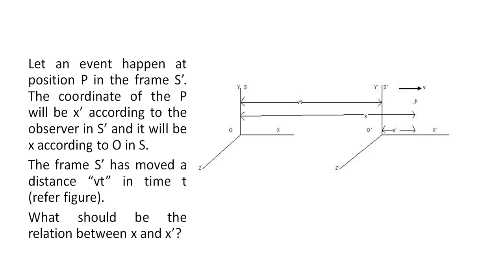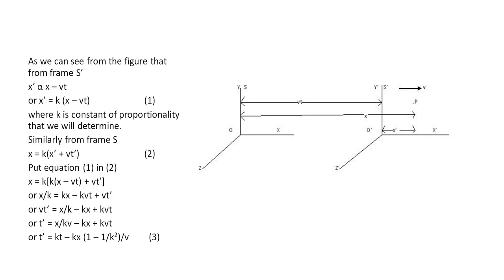Now, what should be the relation between X and X'? As we can see from the figure, X' is directly proportional to X minus vt. In the Galilean transformation equations it was X' equals X minus vt, but here it is proportional to X minus vt because the velocity is comparative to the speed of light. After removing the proportionality symbol, we get X' equals k(X minus vt). The minus sign is because from S' frame, S is moving in the negative direction with velocity minus v. Similarly, from frame S, X equals k(X' plus vt'). These are equations 1 and 2.